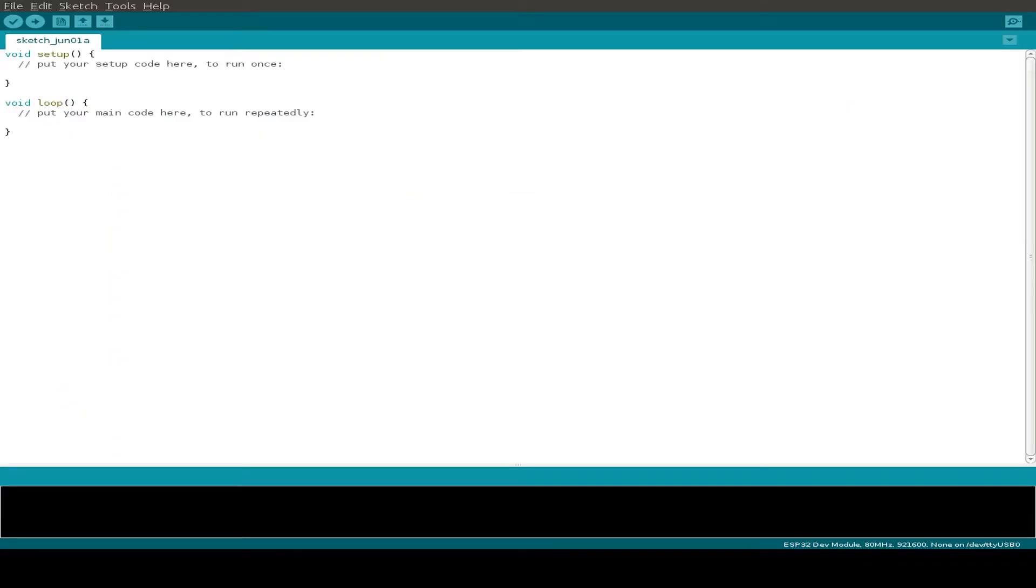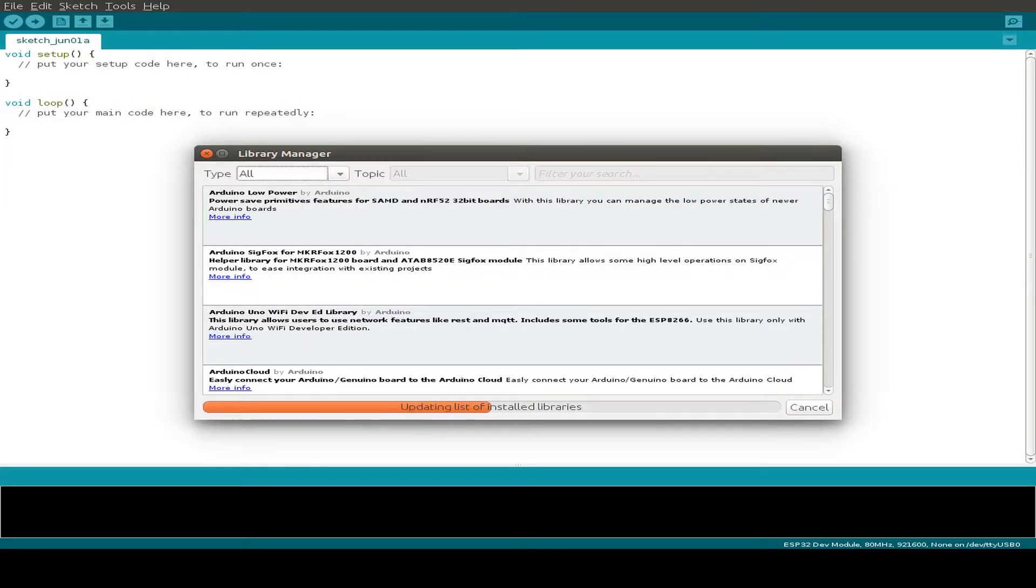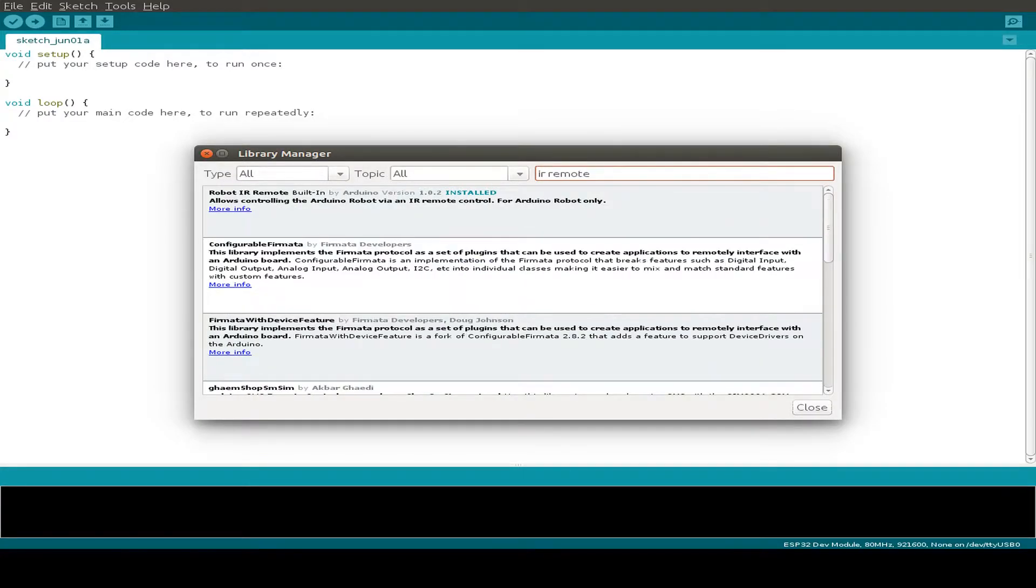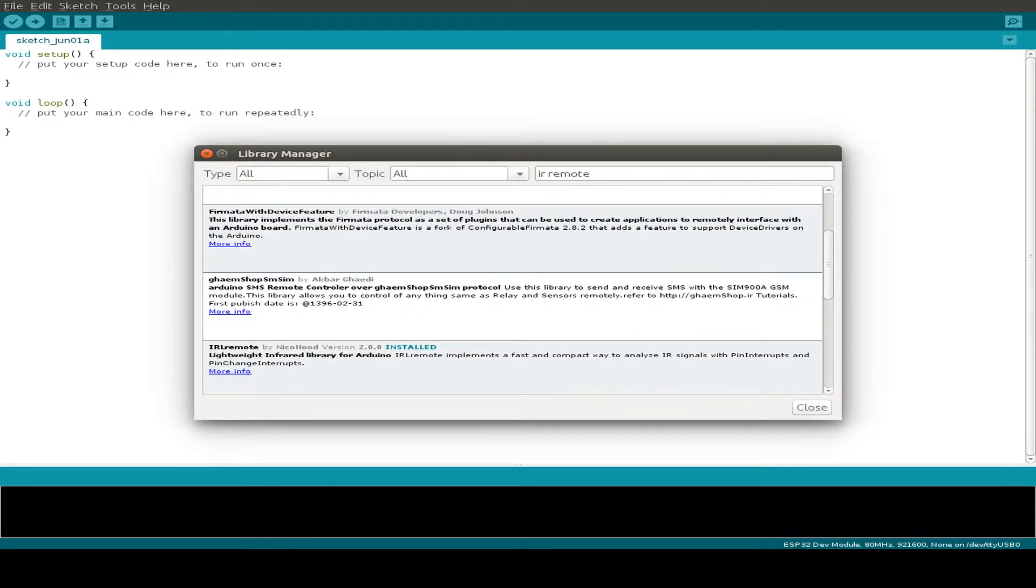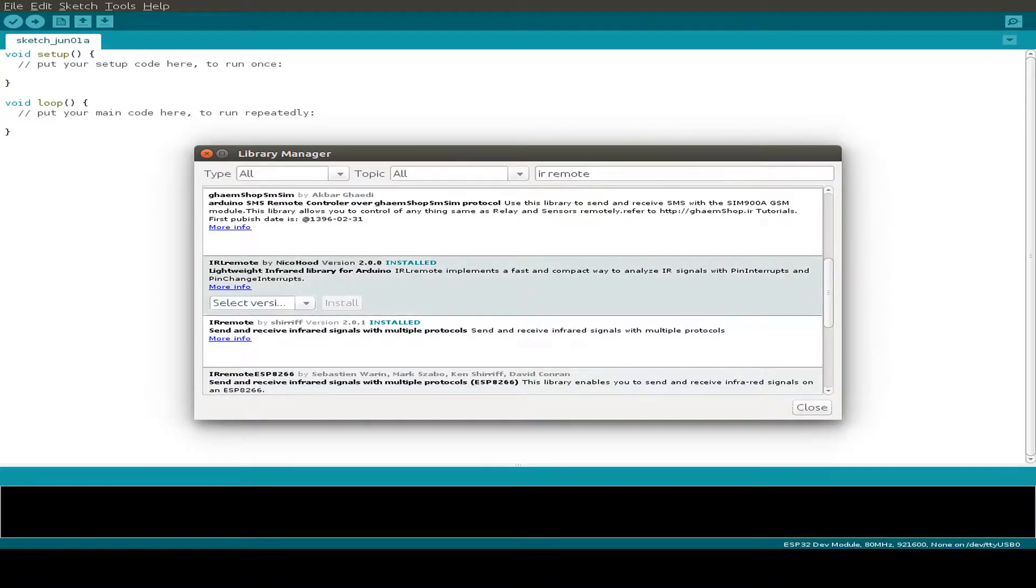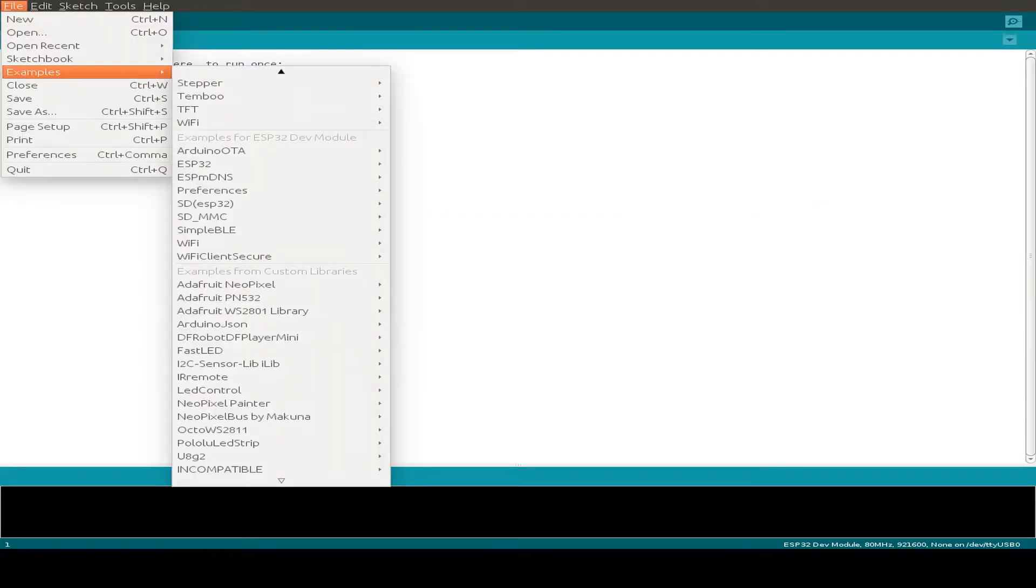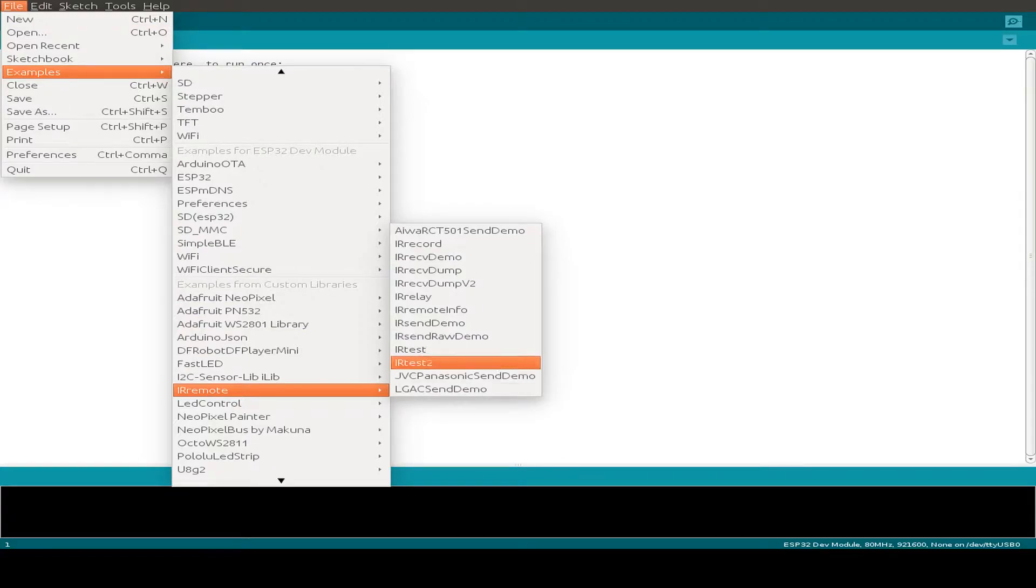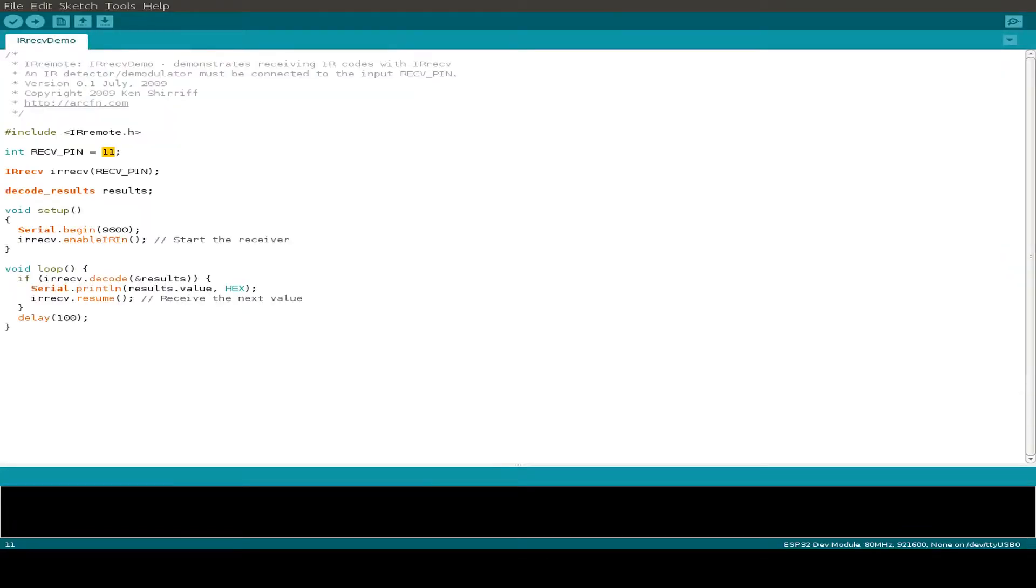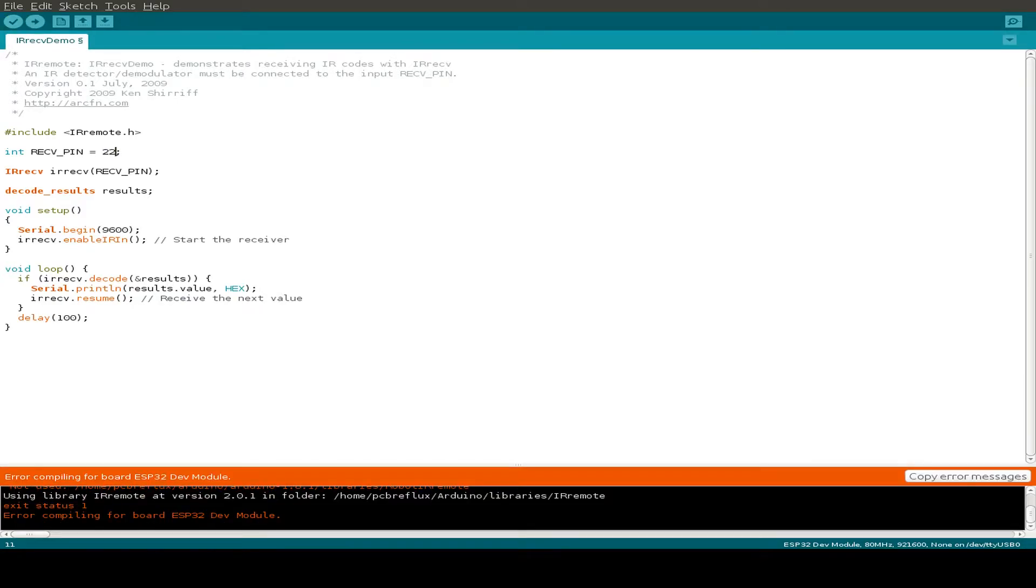I want to set up some Arduino code and I'm searching for a library for this infrared remote control in the library manager. I found some small libraries like the robot IR remote and also this IR remote library. There's also an IR remote control and also this IR remote for the ESP8266. I open some example files, maybe we can do the IR received demo, and I'm just switching to pin 22 to the right GPIO pin and we can try to compile this code.